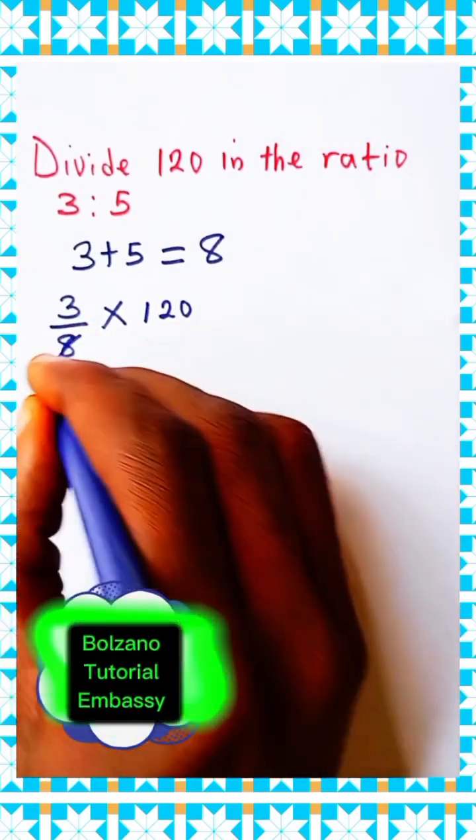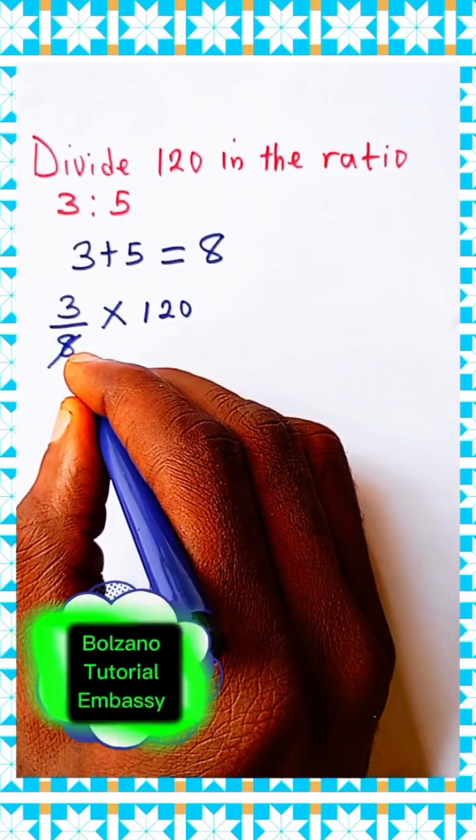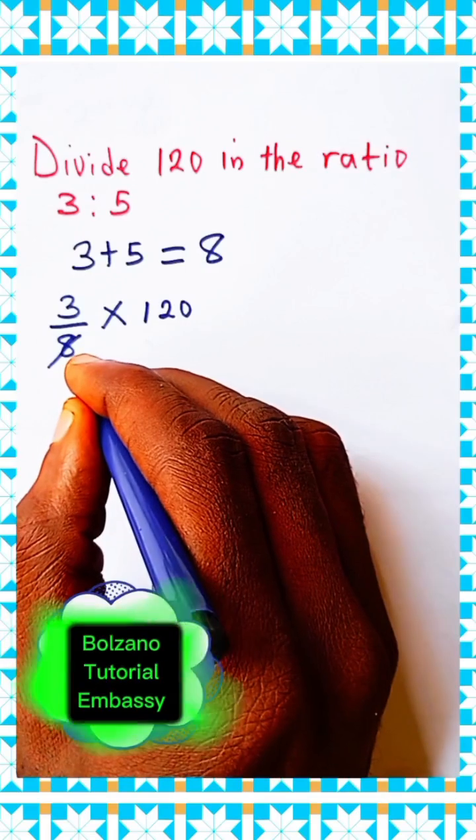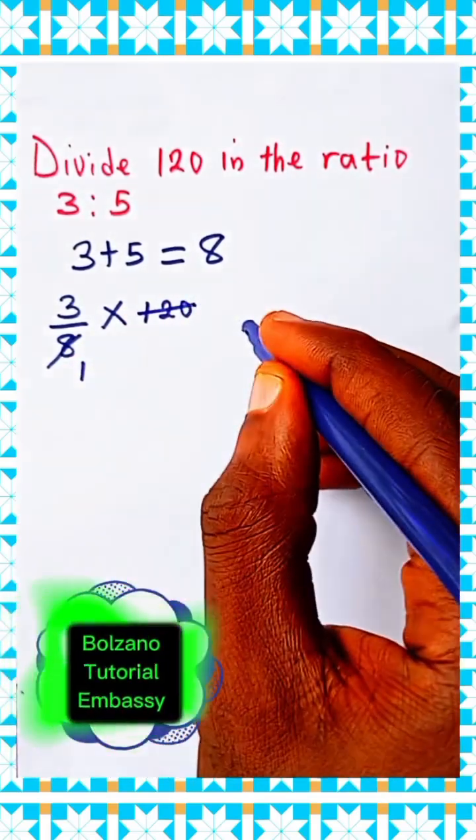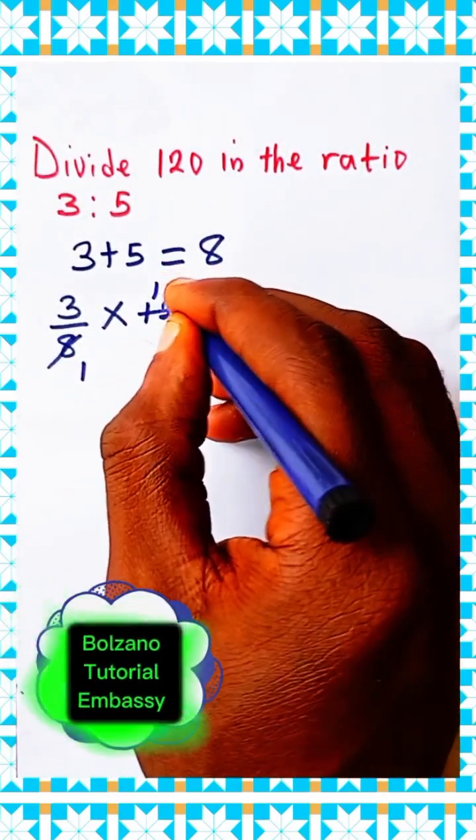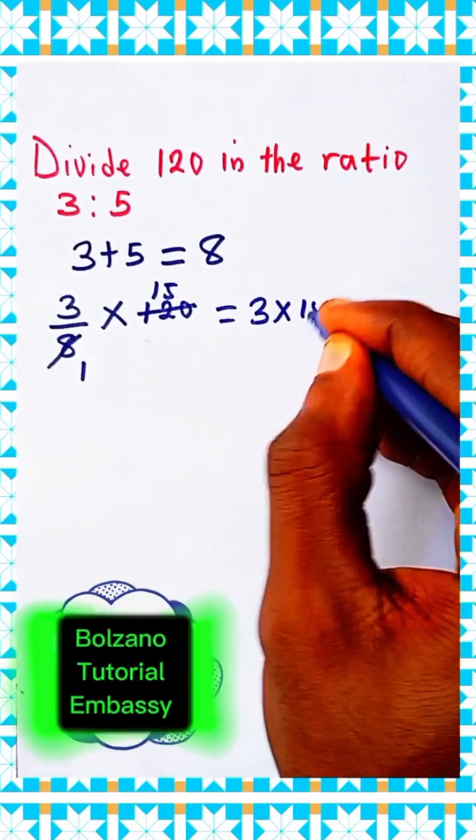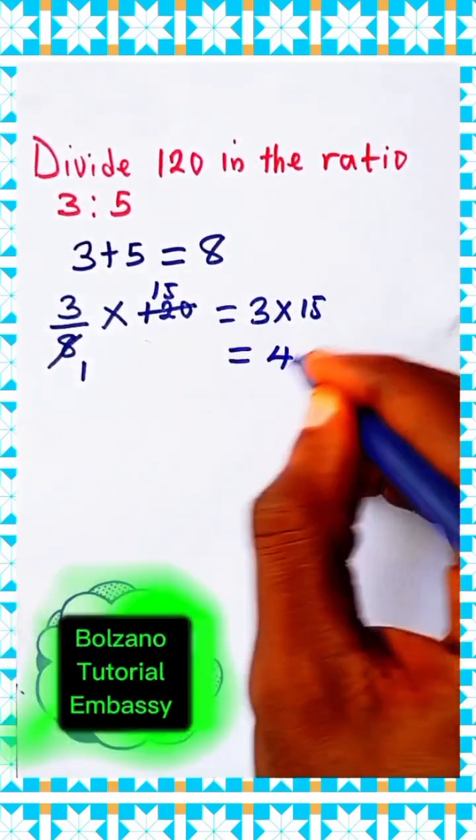So let's simplify. 8 divided by 8 is 1. 8 goes into 120 fifteen times, leaving us with 3 times 15, and that's equal to 45.